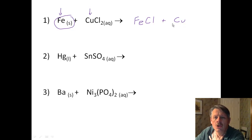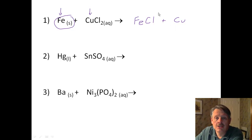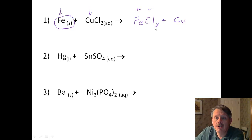The question is what kind of charge do we have? The directions say for transition metals, use the charges shown on the activity series. When you look at the activity series, iron has a 3+ charge. Chlorine has a 1− charge, so when I cross them, I get FeCl₃.